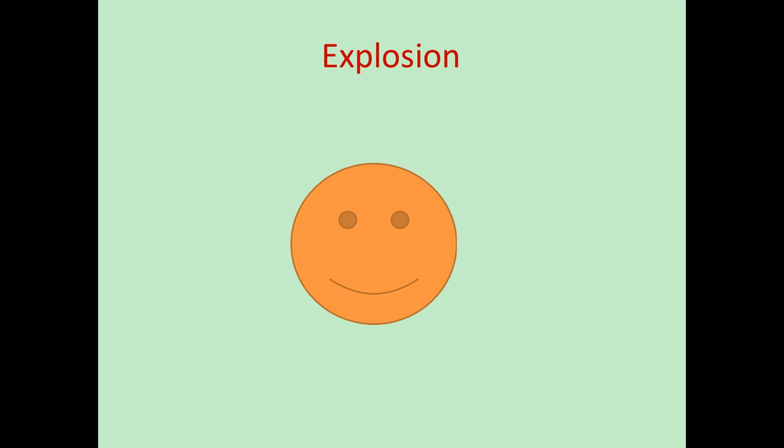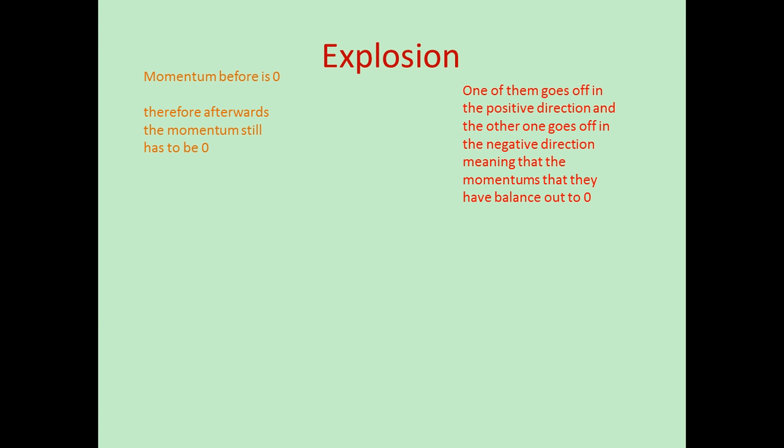Now here's an example of an explosion. The momentum before was 0, as you can see — it wasn't moving until it exploded spontaneously. Therefore afterwards, the total momentum still has to be 0. The pieces went off in different directions, so one has a positive velocity and the other a negative velocity. When you work out the individual momentums and add them together, they come out as 0.